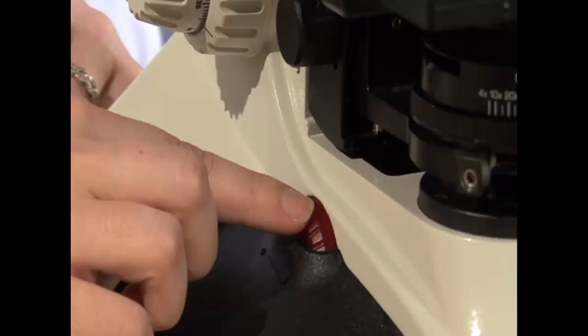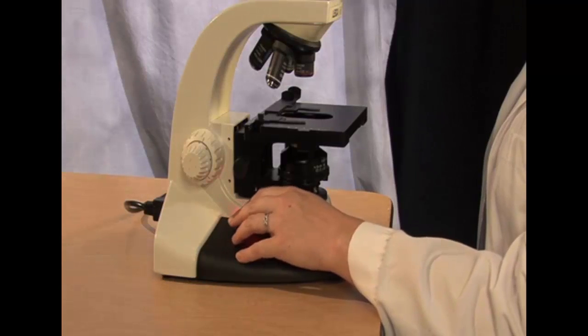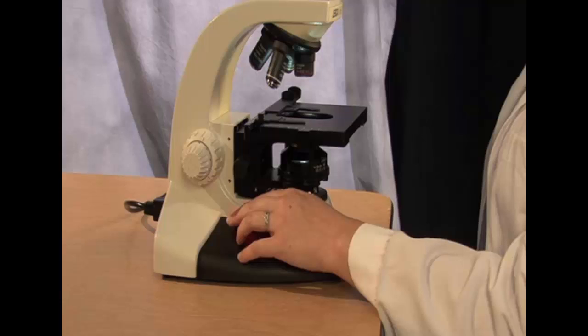For our specimen, we will be using a prepared letter E slide. Start by turning on the light at the bottom of the microscope, and to get the best contrast, adjust the light so that it is not on full power.